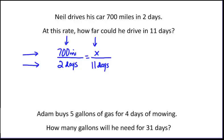Now we simply need to multiply and solve it. So 700 times 11 is equal to 2 times x.